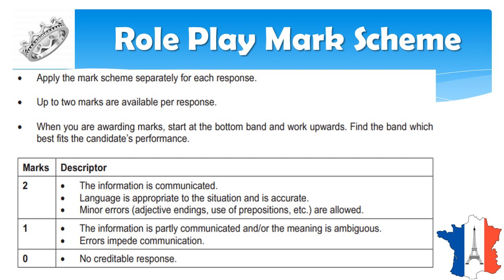How is the band decided? First: if no creditable response is given, you get 0. Next: if there are errors impeding the communication — that is, the answer is not clear, it's partially communicated, or the meaning is not clear — you are given 1 mark. Two marks is given when the information is clearly communicated, the language is appropriate to the situation and accurate. Minor errors like adjective endings or use of prepositions are allowed. So role play is quite easy — don't get tense, just answer from the question.